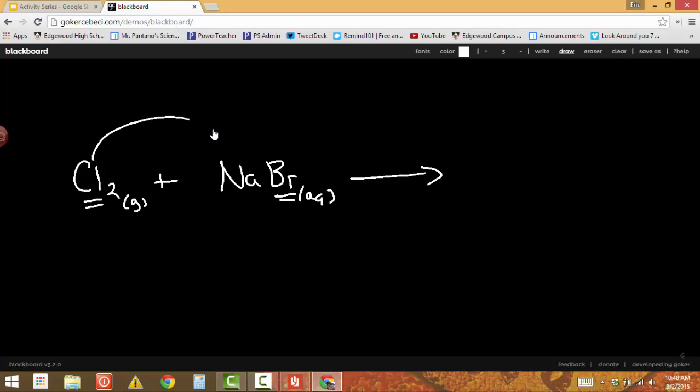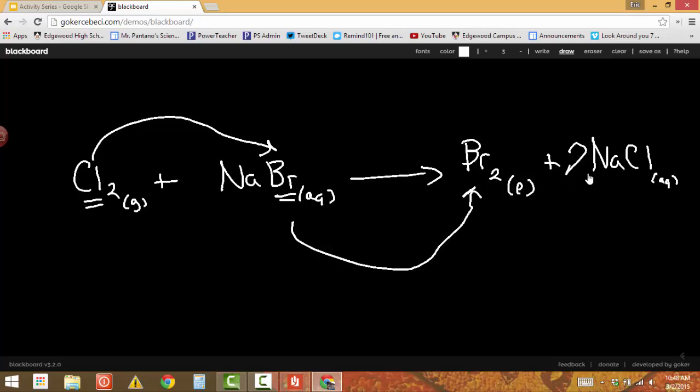Chlorine will come in and kick bromine out. Bromine will come out as Br2 because bromine is one of the seven diatomics. Bromine is a liquid at room temperature. Chlorine goes with the sodium to form sodium chloride, NaCl, not NaCl2 because that's not how you write sodium chloride. That is aqueous because it's an alkali metal compound. To balance this, I need two NaCls and two NaBr.